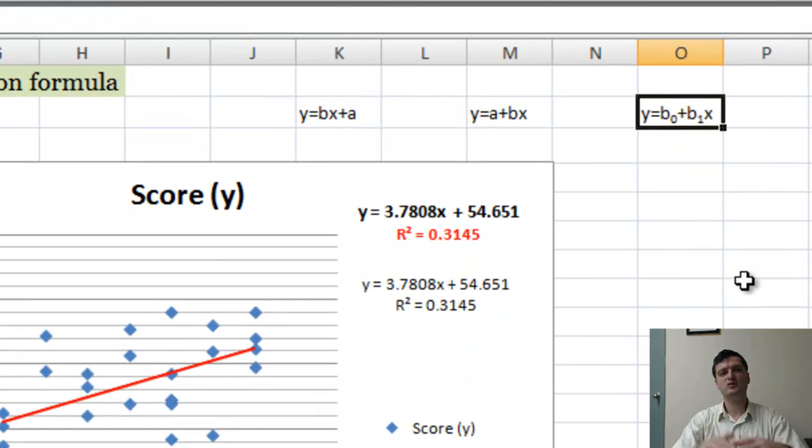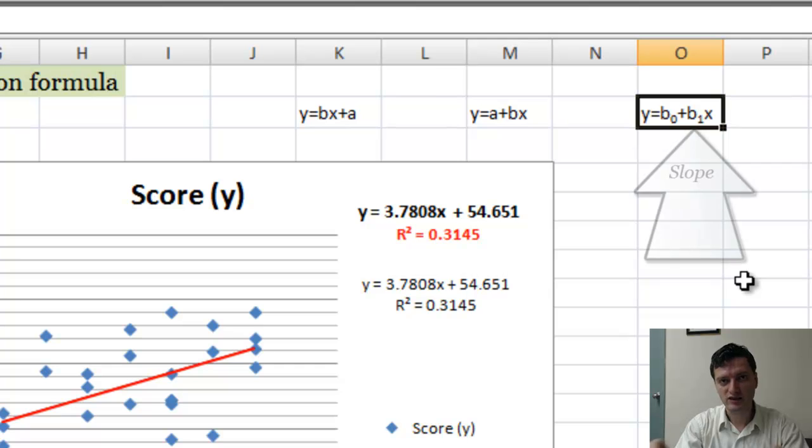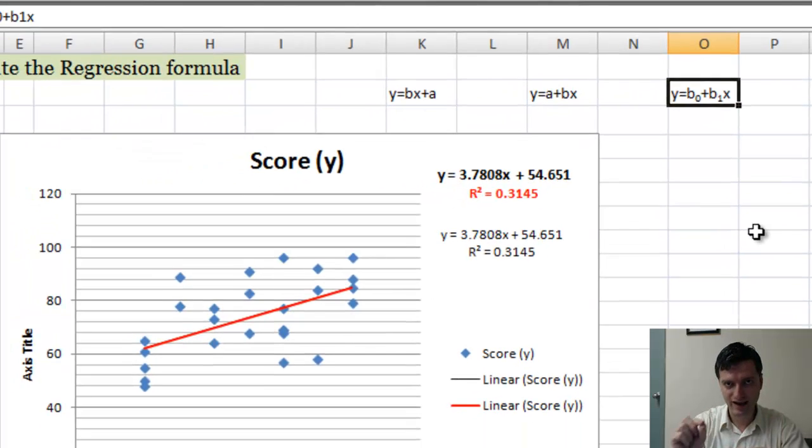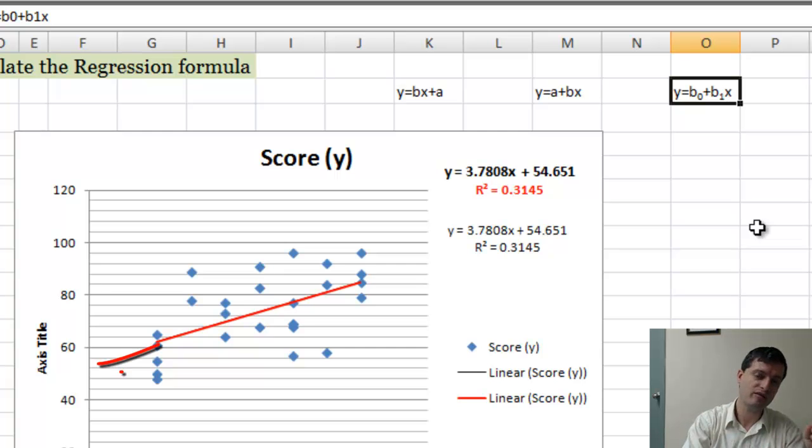So this is probably the formula that you will see in other textbooks. It's exactly the same thing. The factor that is multiplied with X is always a slope, and the other factor that is not multiplied by X is always the intercept, the point where the regression line intersects the Y axis, or the point where the dependent variable value is when the independent variable is 0.